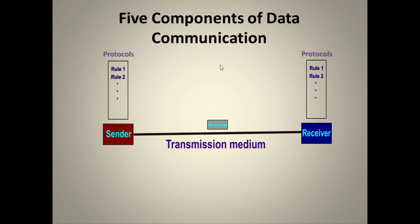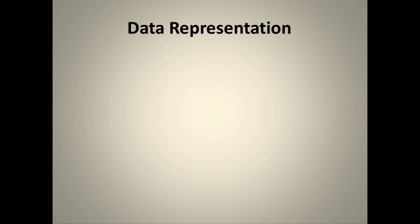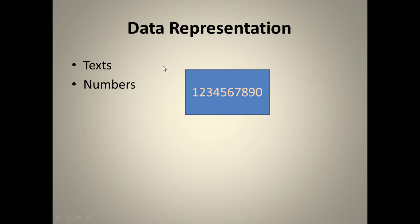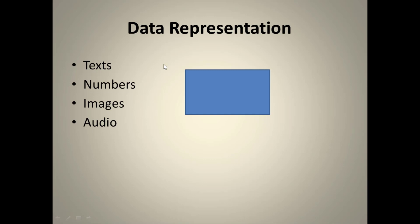Data representation covers the various ways to represent information. The first form is text, followed by numbers. Data can also be represented as images, audio, and finally video. These are the various forms of data, and you can also have combinations of them.